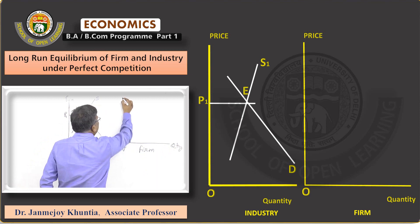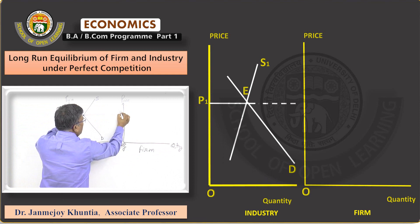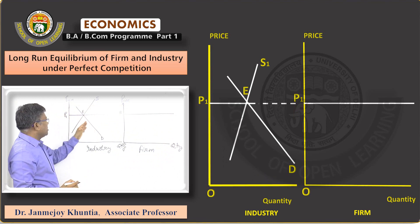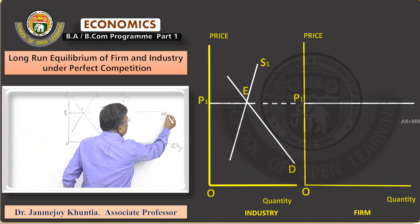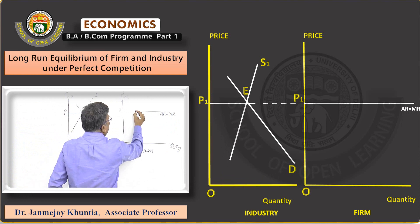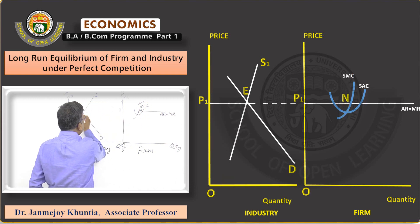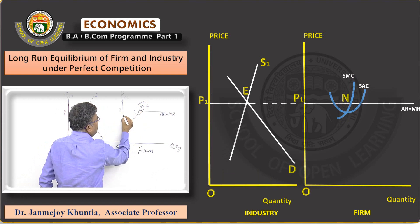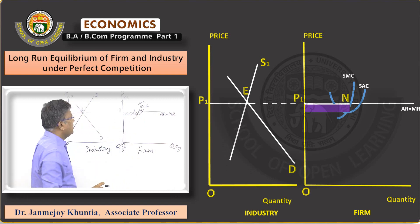At price P1, the firm is earning short-run abnormal profit. As you know, the firm is a price taker and the industry is a price maker, so initially the price P1 set by the industry is accepted by the firm, and this becomes the demand curve for the firm in the beginning. The firm is at short-run equilibrium at point N, where marginal revenue equals short-run marginal cost. The difference between price and average cost at the point of equilibrium — the shaded rectangle — is the abnormal profit of the firm in the short run.